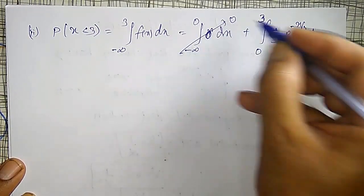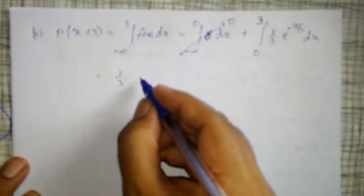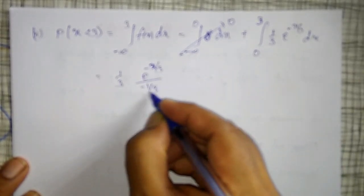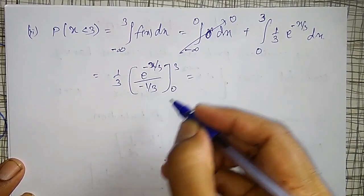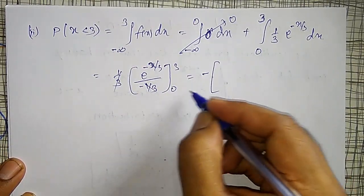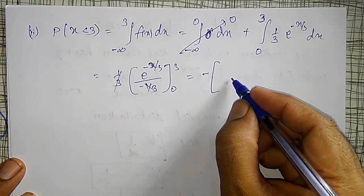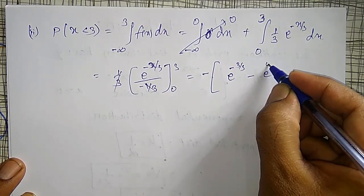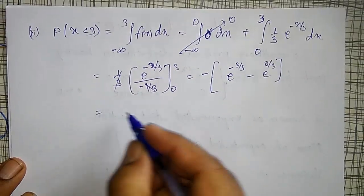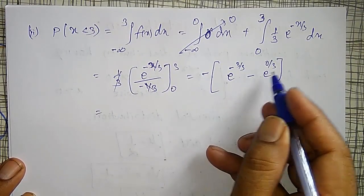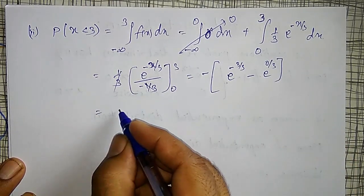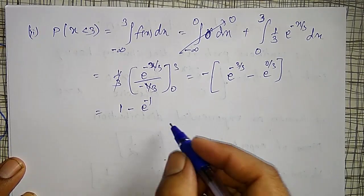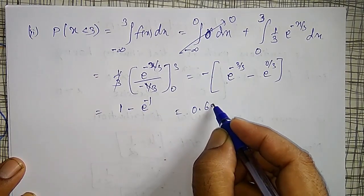The first integral is 0. For the second part: (1/3) outside, integration of e^(−x/3) divided by (−1/3), between limits 0 to 3. The 1/3 cancels, leaving minus of [e^(−3/3) − e^(0/3)], which equals 1 minus e^(−1).